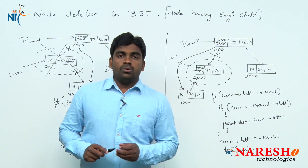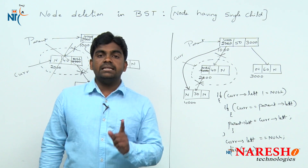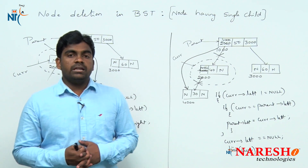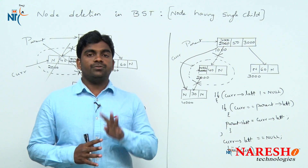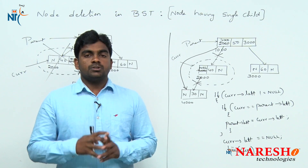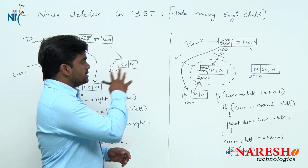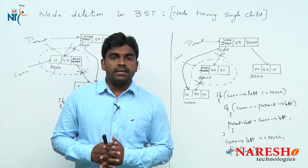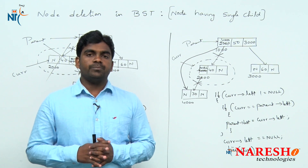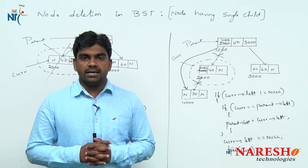If you want to delete a node having single child in binary search tree, totally we have four options - four logics you have to select. Total four chances are there to delete. All four chances we discussed very clearly in this session. I hope you enjoyed this video. For more videos, please subscribe to the channel. Thank you.